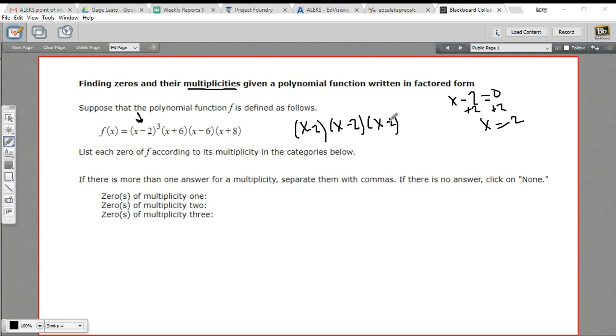Its multiplicity is 3 because there are three of these. So if you see something like this with a power, the multiplicity is going to be the power here. So the multiplicity of 3, that's the zero where x is 2.